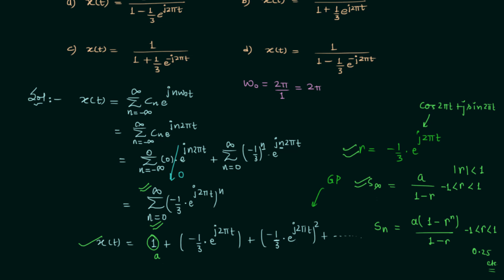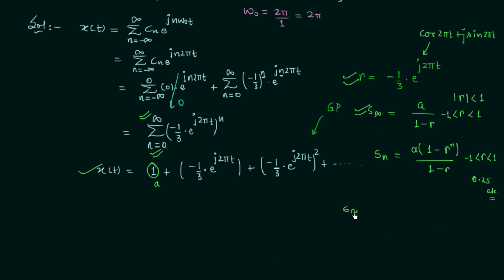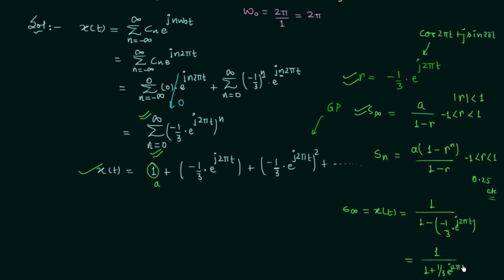Now let's apply the formula. Signal X(t) = S_∞ = a / (1 − r), where a = 1 and r = −(1/3)e^(j2πt). Opening the bracket: X(t) = 1 / (1 + (1/3)e^(j2πt)). This is the expression for signal X(t) and this is our answer.